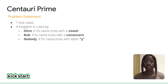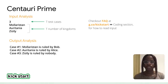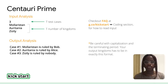We note that there are two test cases. A kingdom is ruled by Alice if the kingdom's name ends with a vowel, ruled by nobody if it ends with the letter Y, or by Bob if it ends with any other consonant. Take note of the input and output formats. For the inputs, the first line has the number of kingdoms, and the next consecutive lines have the name of each kingdom, with each starting with a capital letter. For the outputs, take note of the full stop and the capitalization.